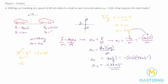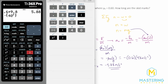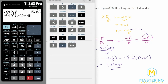Isolating delta x: negative v-initial squared equals 2 times a times delta x. Dividing both sides by 2a, delta x equals negative v-initial squared divided by 2 times the acceleration. Plugging in values: negative 40 meters per second squared in the numerator, divided by 2 times negative 5.88 meters per second squared.